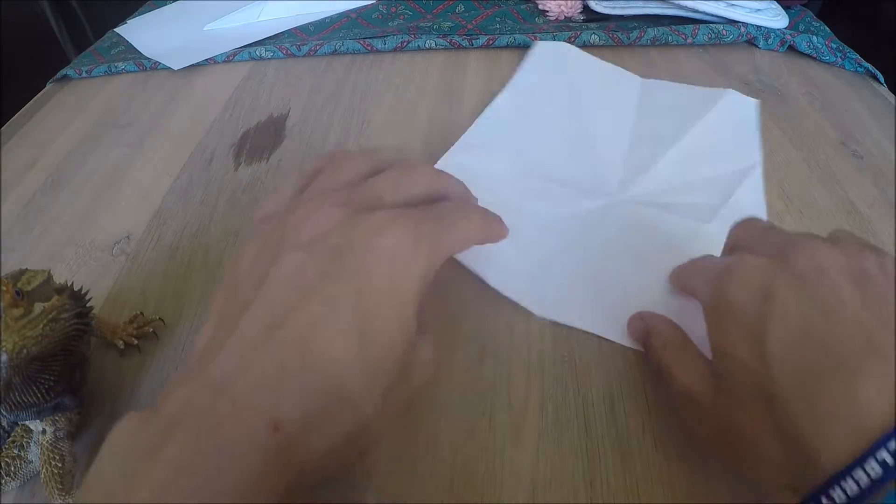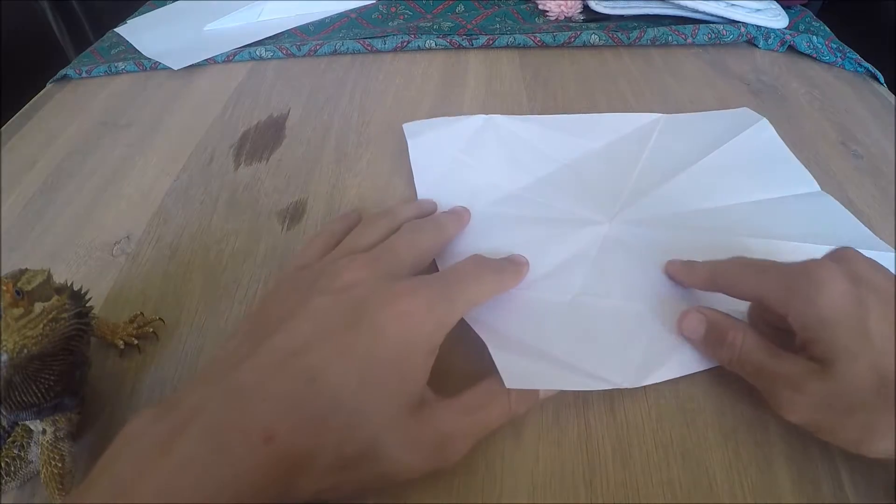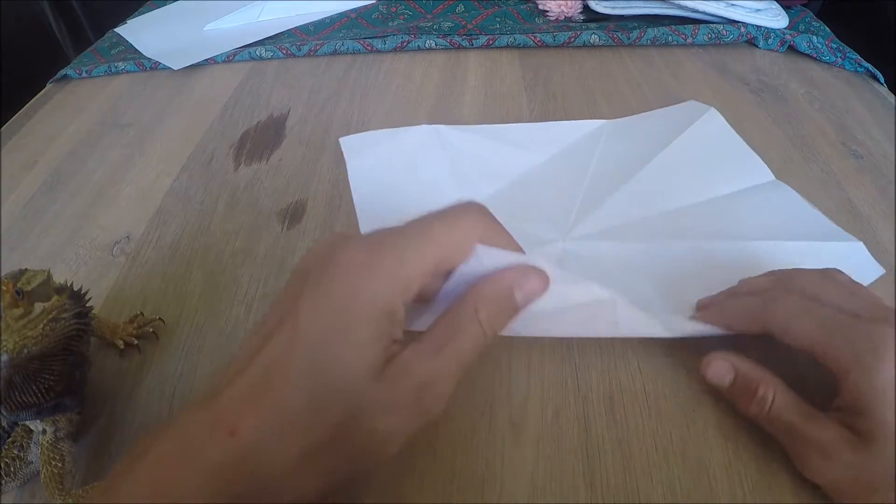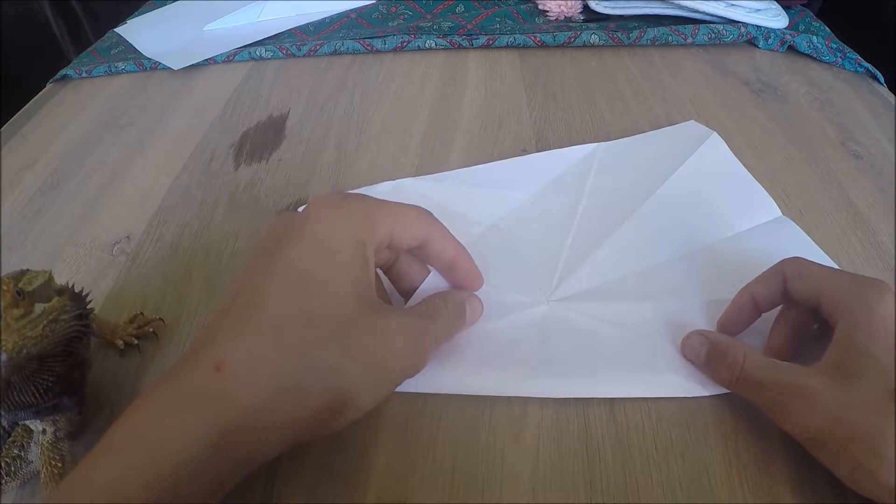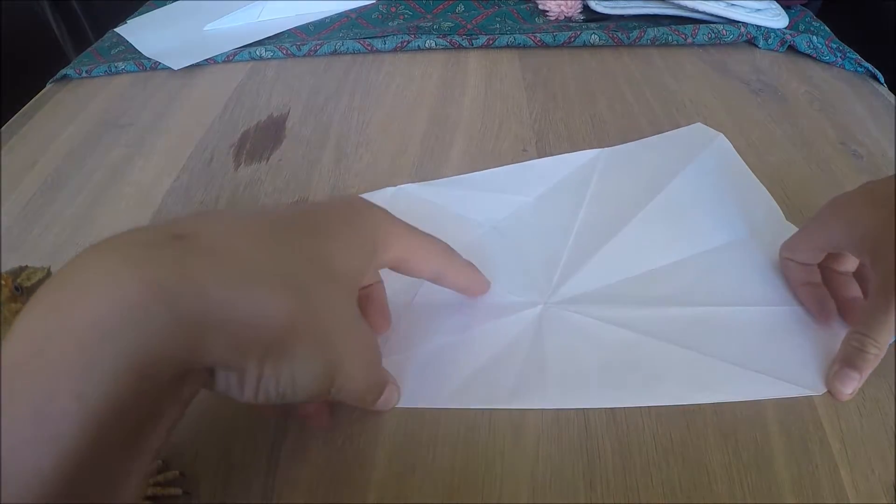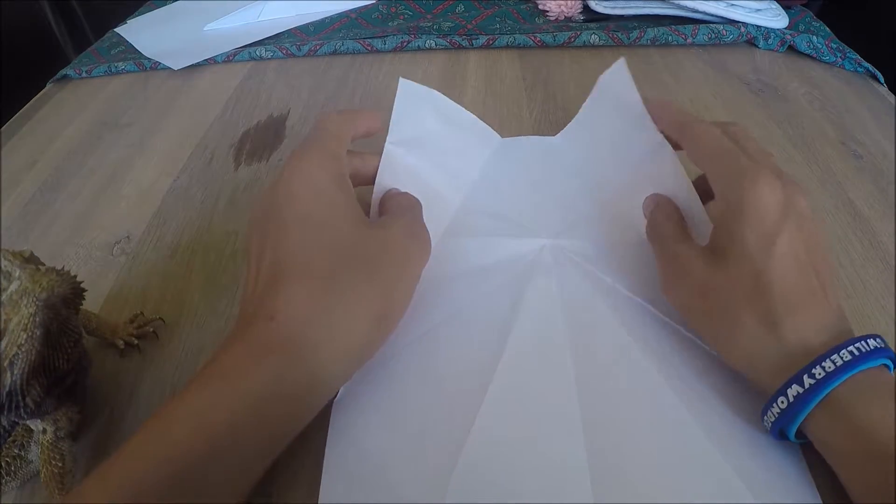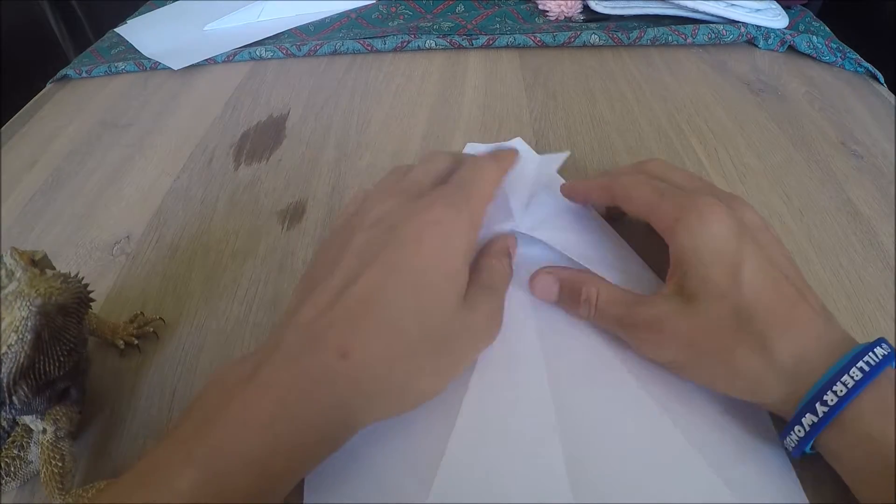Then unfold that and do exactly the same for the other side. You see this line going across here that you've just made. Get this piece of paper and run it along parallel to that, then make the crease. Once you've done that, you've got both sides. You can fold each side on top of each other.